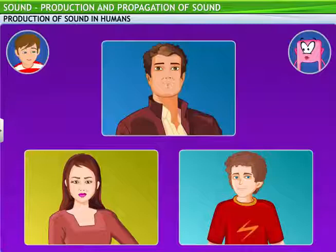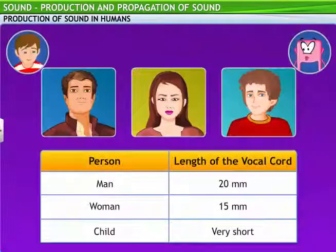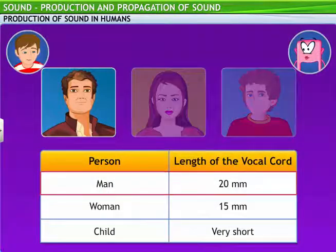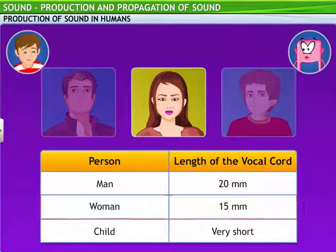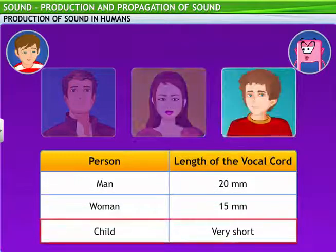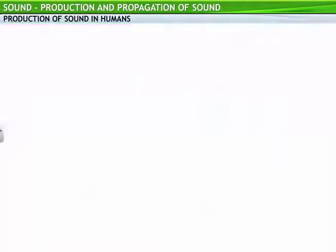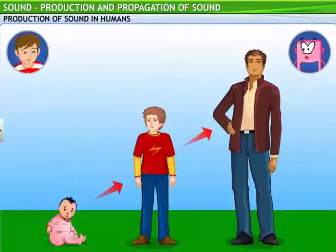But there is another interesting thing about how sound produced can differ from person to person. Listen to these voices. Hello Denise. Have you ever wondered why the voices of men, women, and children sound different? This is because the vocal cords in men are about 20 millimeters long and in women these are about 15 millimeters long. Children have very short vocal cords. So as we grow, our vocal cords also grow. That's right. In fact, when your vocal cords grow, your voice will change. We often refer to this as the breaking of voice in boys.